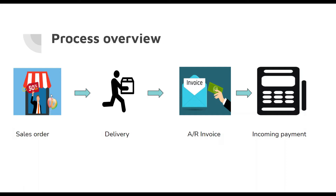We can create a sales order from a sales quotation, but I'm not going to talk about that because we've already seen the purchase request and purchase quotation, and these documents are pretty similar. You can explore that area by yourself. Once you get the sales order from the customer, it's kind of an agreement that they're going to buy these goods from your company at a particular price and quantity.